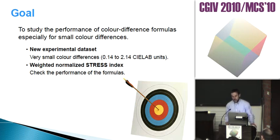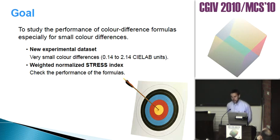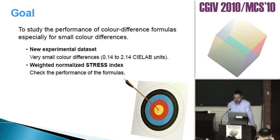To achieve this goal, a new experimental data set has been used. The data set is formed by color differences in the range of 0.14 to 2.14 CIELAB units. To check the performance of the formulas, the weighted normalized stress index has been employed.